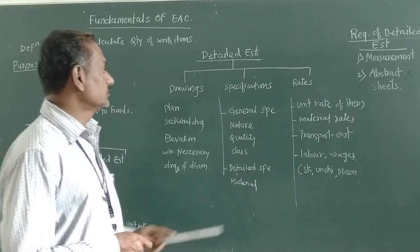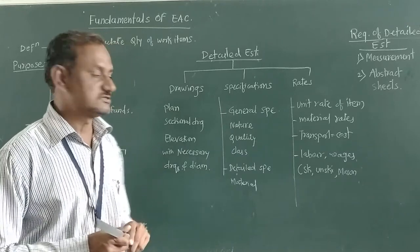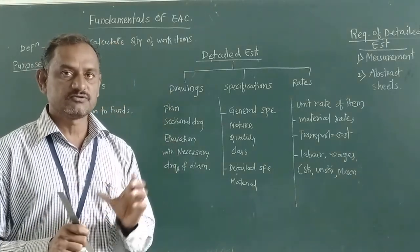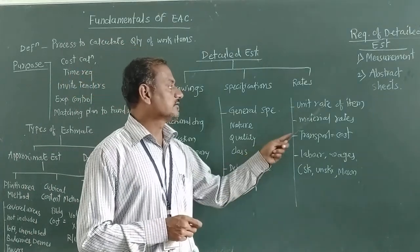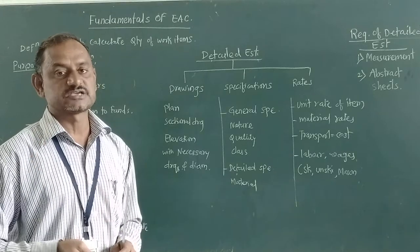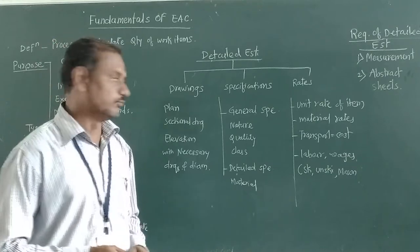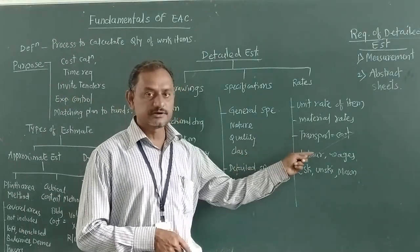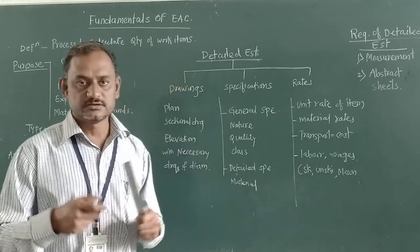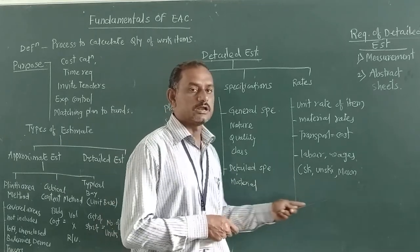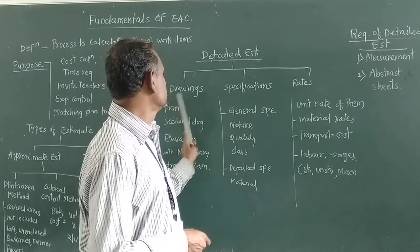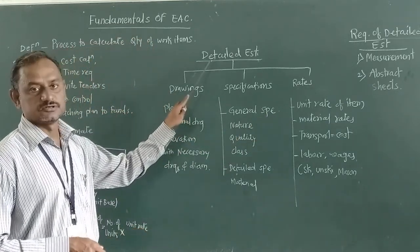The third point is rates. The rates applied for detailed estimate include: unit rate of items — for example, excavation quantity is calculated in cubic meters, so the rate of excavation is the amount per cubic meter, that is the unit rate of item. Then material rates, transportation cost, labor and wages. Labor charges differ according to the class or type of labor — skilled labor, high-skilled labor, mason, carpenter, etc. All three points are considered for calculation of detailed estimate.